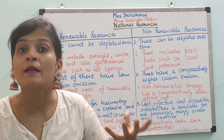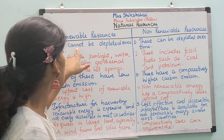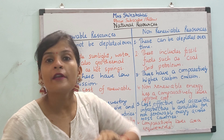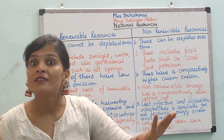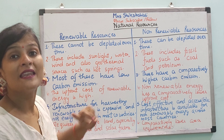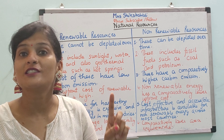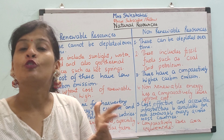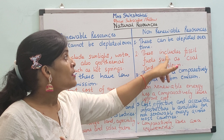What are renewable resources? Renewable means we can renew them — we can use them again. These cannot be depleted over time, whereas non-renewable resources can be depleted over time. Examples of renewable resources include sunlight, water, wind, and geothermal sources such as hot springs. They are reproduced repeatedly and are not depleted over time.